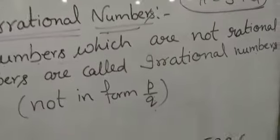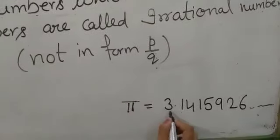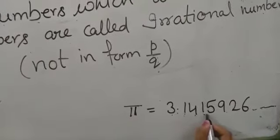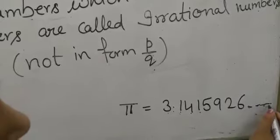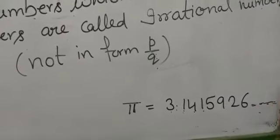But what is the actual value of Pi? 3.1415926 and so on. I don't know how many decimals will come.